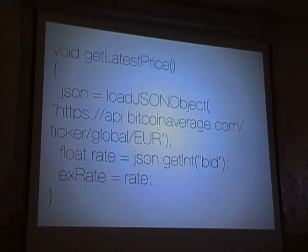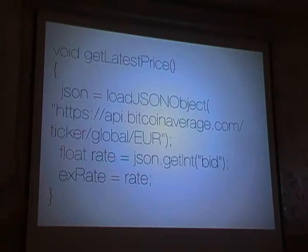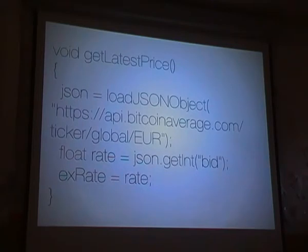Getting the latest price — this is the most simple part. I always like getting as low level as possible, so I wrote a little socket program which gets the JSON string from the website, removes the headers, analyzes the JSON, and returns it. Then I realized that Processing had a very simple line called 'load JSON object' — you throw in the address and it returns the value. So for now this is it. On the Raspberry Pi version it will actually have the socket connection, but this is the easiest way to get it running.